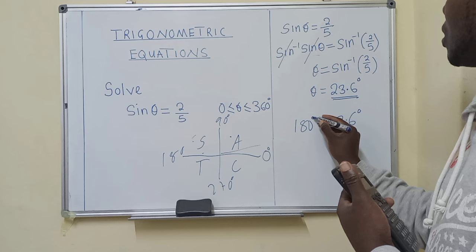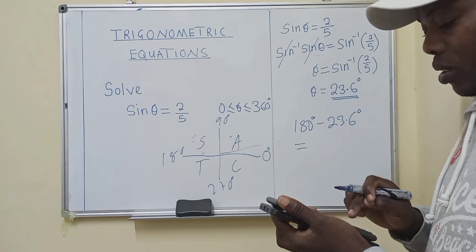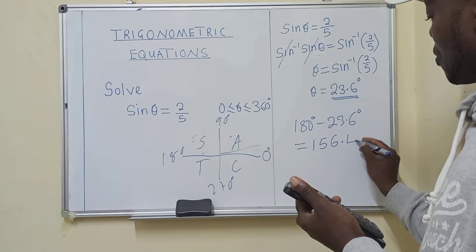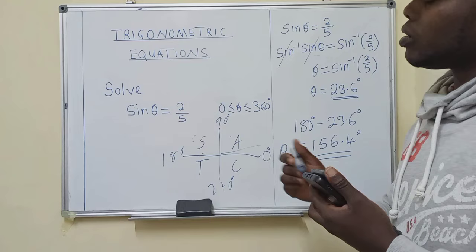So what answer are we getting? So 180 minus 23.6, we're getting 156.4 degrees. So these are the two solutions for this question.